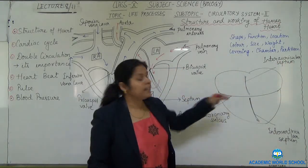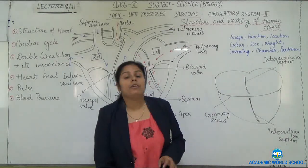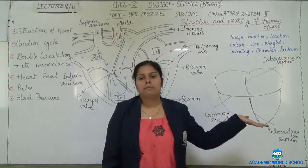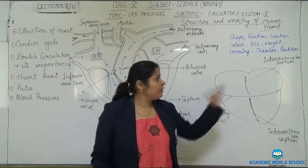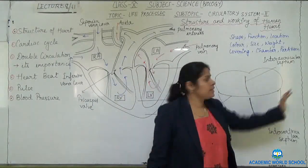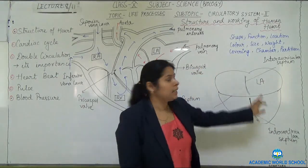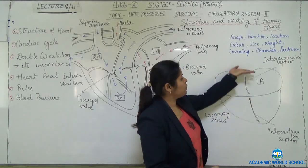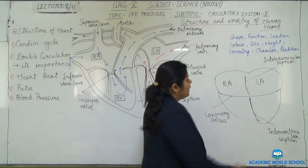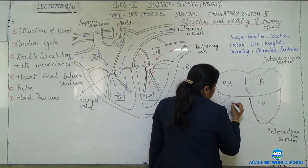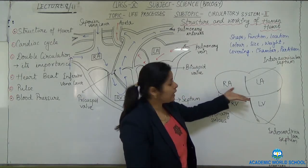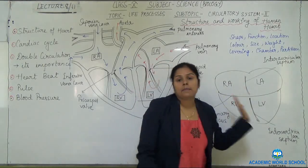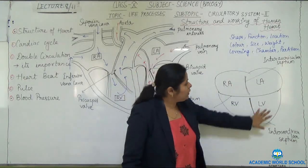In biology, you have to understand how to identify left and right side. Suppose I stand in front of you — this is my left side and this is my right side. So this side will be the left side — this is the left auricle (LA) and this is the right auricle (RA). These two are the upper chambers which receive blood. And this is the left ventricle and this is the right ventricle — the lower two chambers. There are four chambers in total, and all chambers are partitioned to avoid mixing of blood.